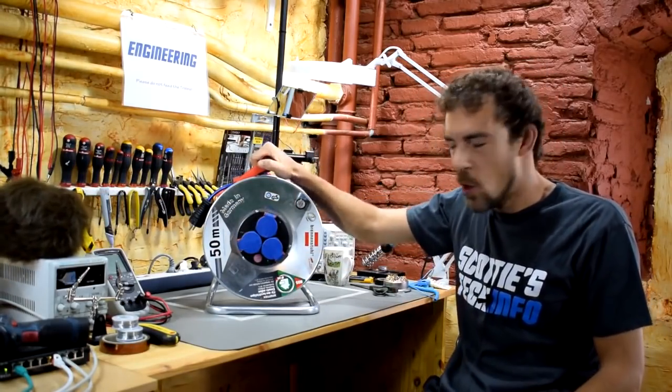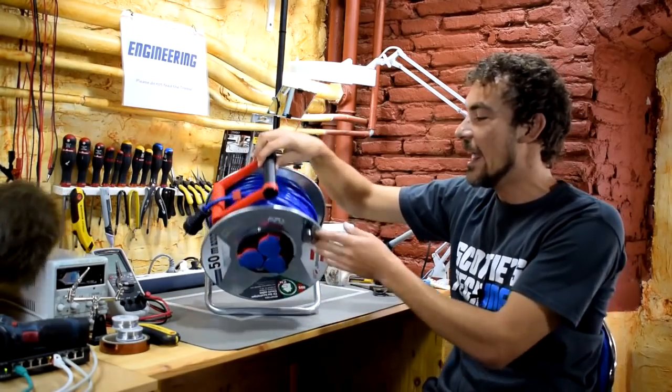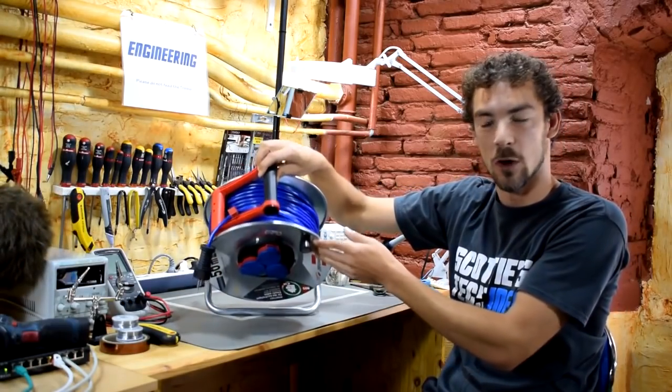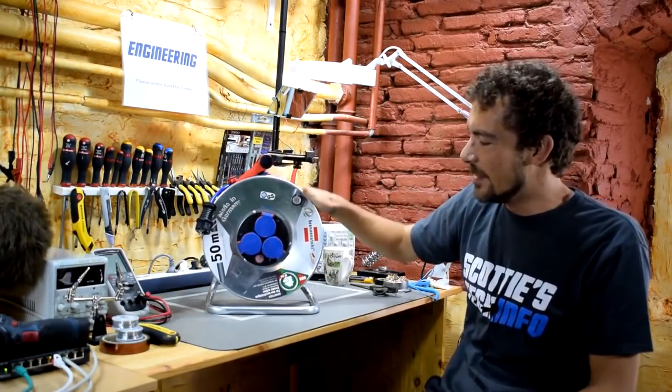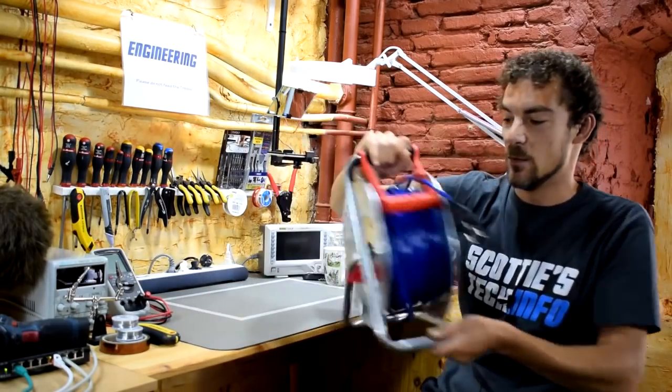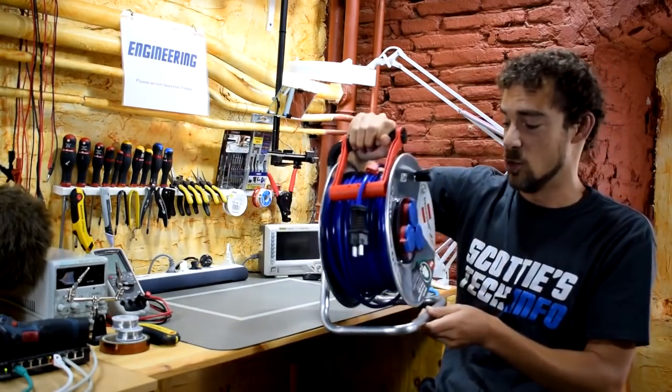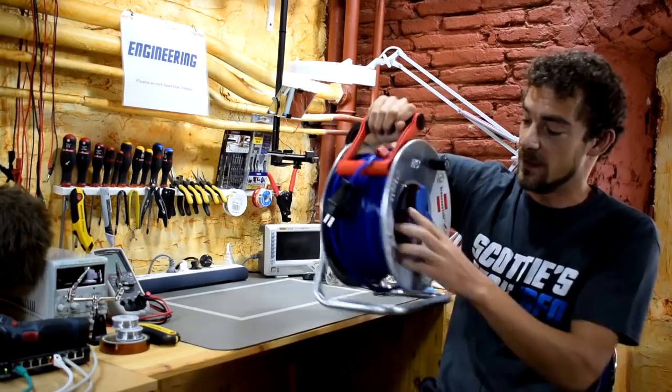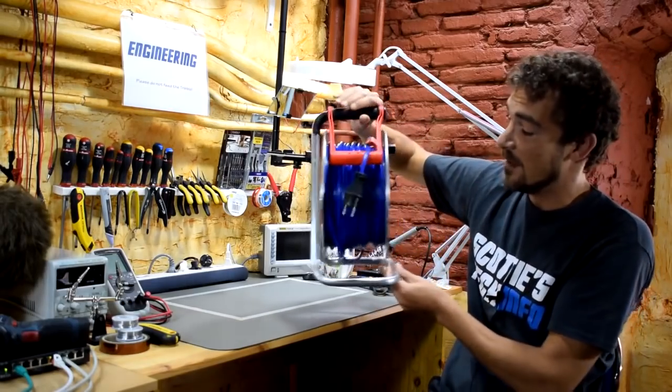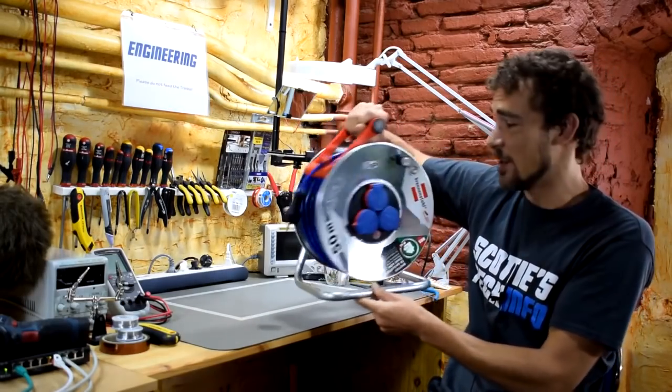The topic for today is rolly extension cords. So the deal with these is that they're extremely handy. This one is obviously a very large Brennenstuhl. This has got European plugs on it. 50 meters long. That's big. It's also very heavy.